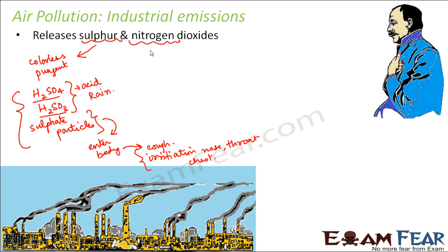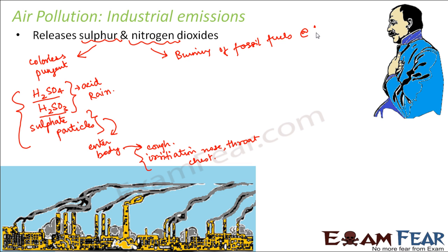Now let us talk about nitrogen dioxide, which is also equally harmful as sulfur dioxide. We mostly get nitrogen dioxide by burning fossil fuels like coal, oil, gas, diesel, and petrol at very high temperatures. When we heat or burn them at very high temperature, nitrogen dioxide is produced.